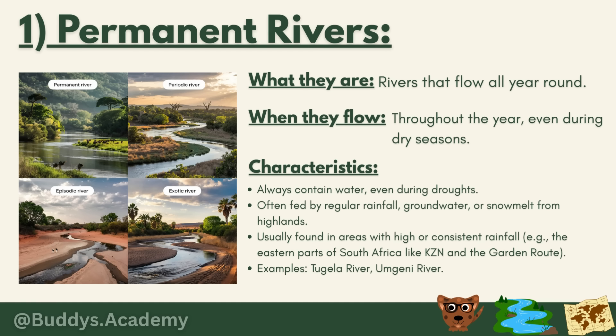Let's start off with permanent rivers. You may hear your teacher saying the word perennial river — permanent and perennial rivers are the exact same thing, just different names. Permanent rivers are rivers that flow all year round. Whether it's the rainy season or the dry season, your river is still going to flow throughout the entire year.